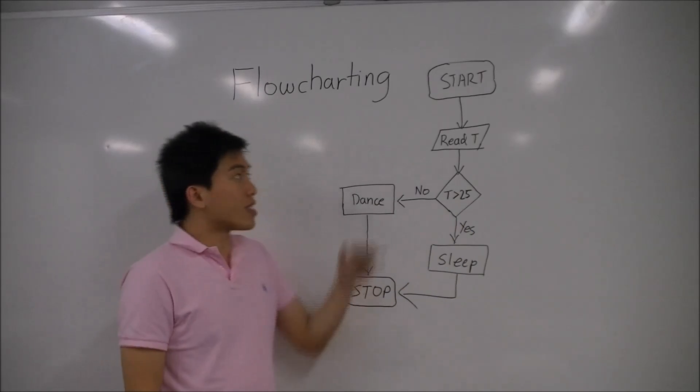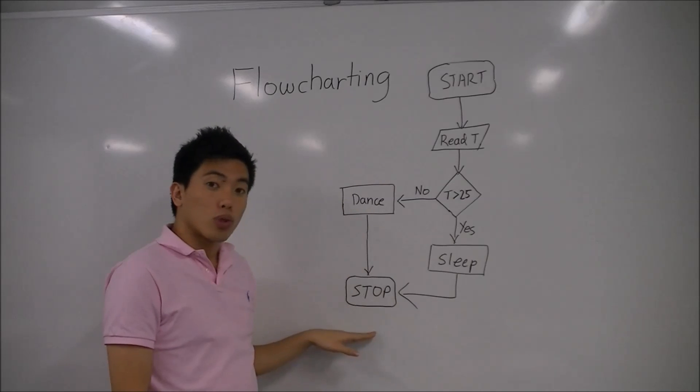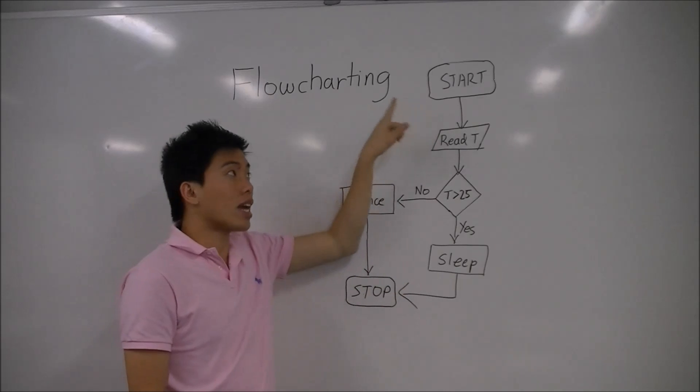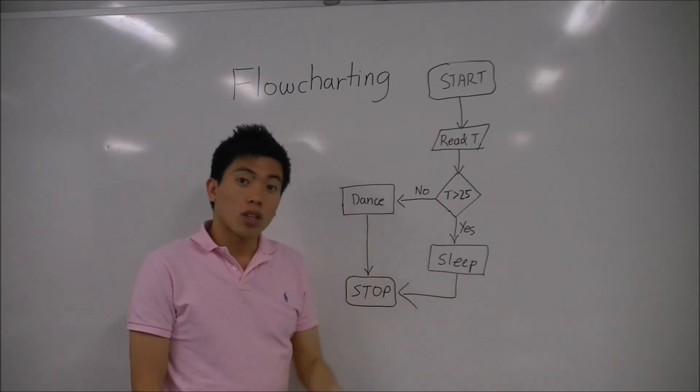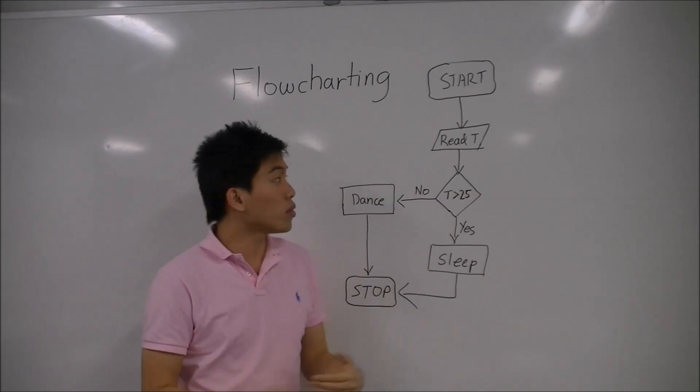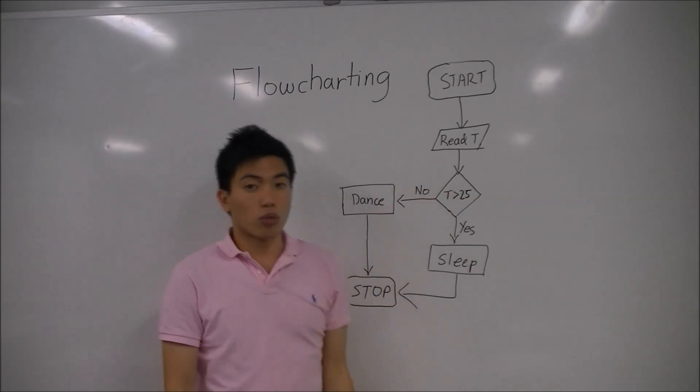So the first one is the start and the stop block, which always comes at the start and the end of every flow chart you draw. These are rectangular, and they have rounded edges. Next you have your input block, which is when you take data into your system. So that could be something like reading a temperature sensor.